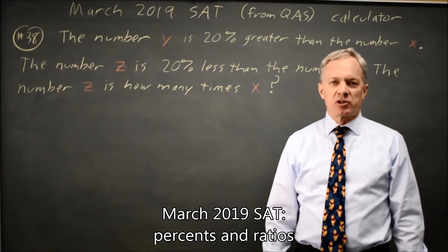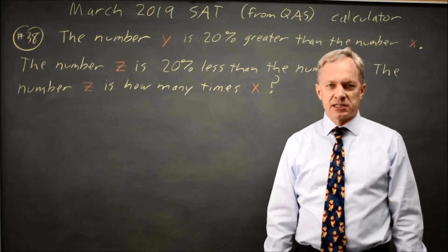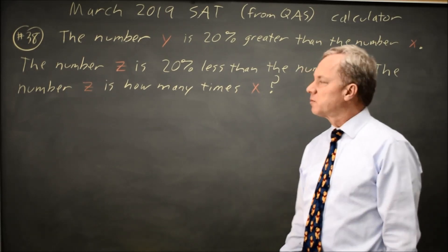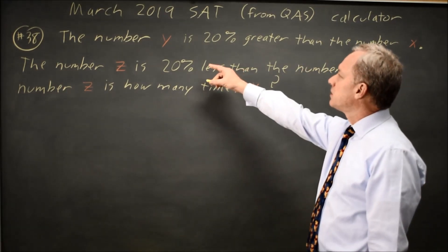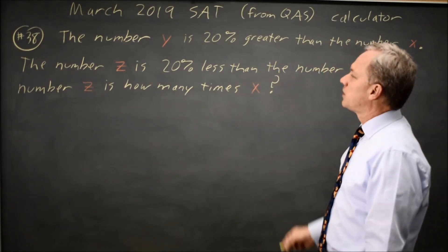This is calculator question number 38, the last problem from the March 2019 SAT. College Board gives us a word problem relating three numbers. They tell us Y is 20% greater than X and Z is 20% less than Y.